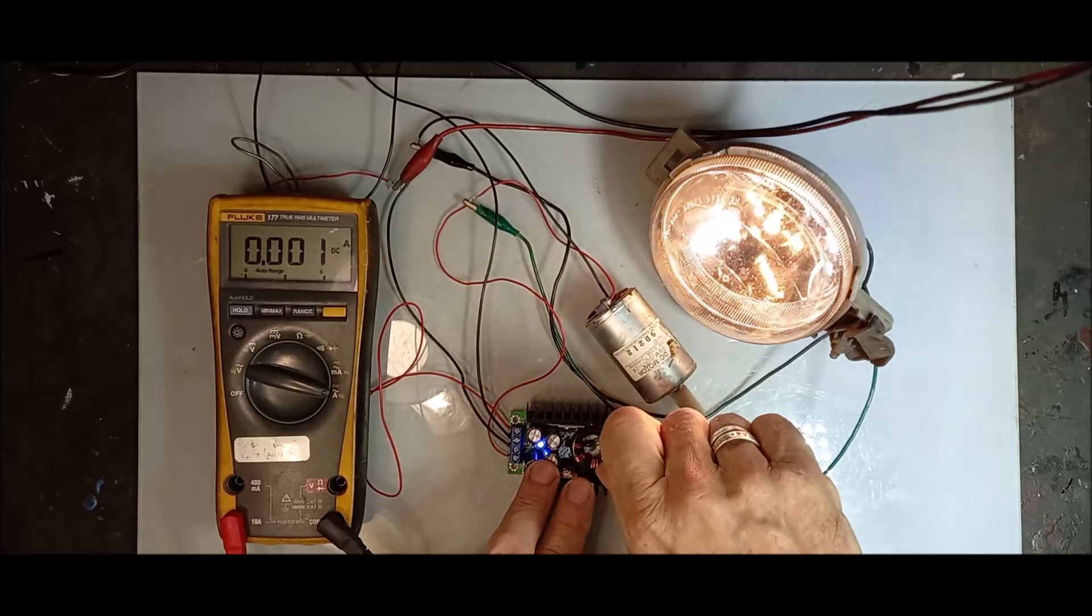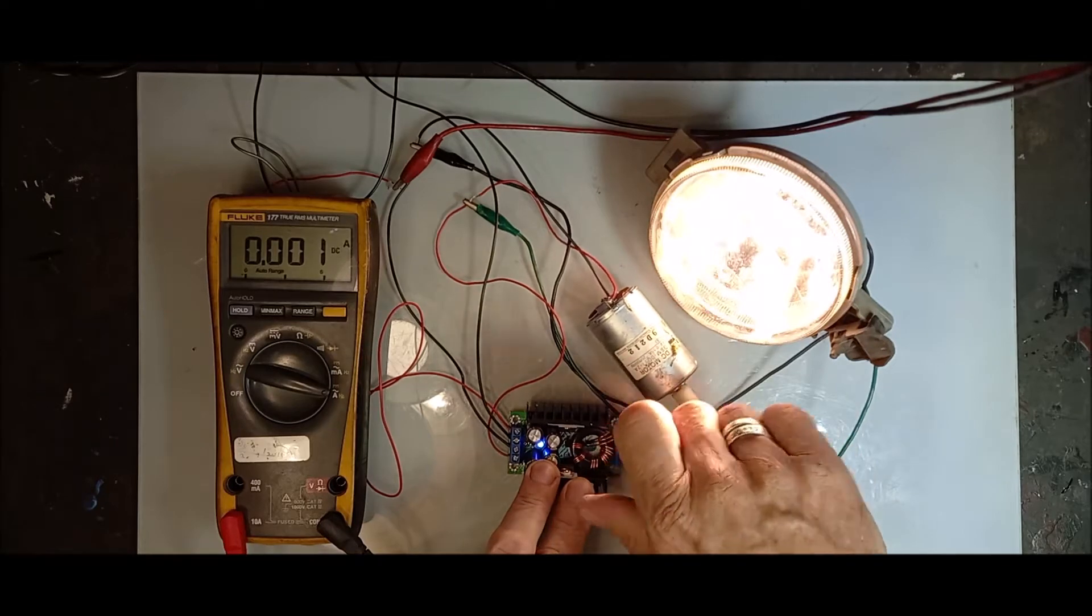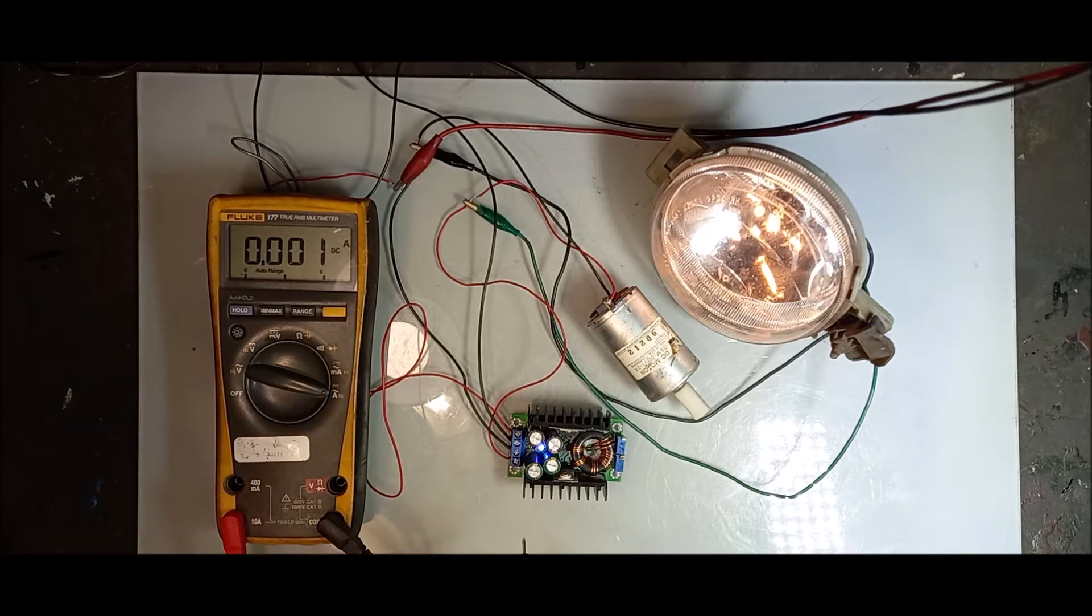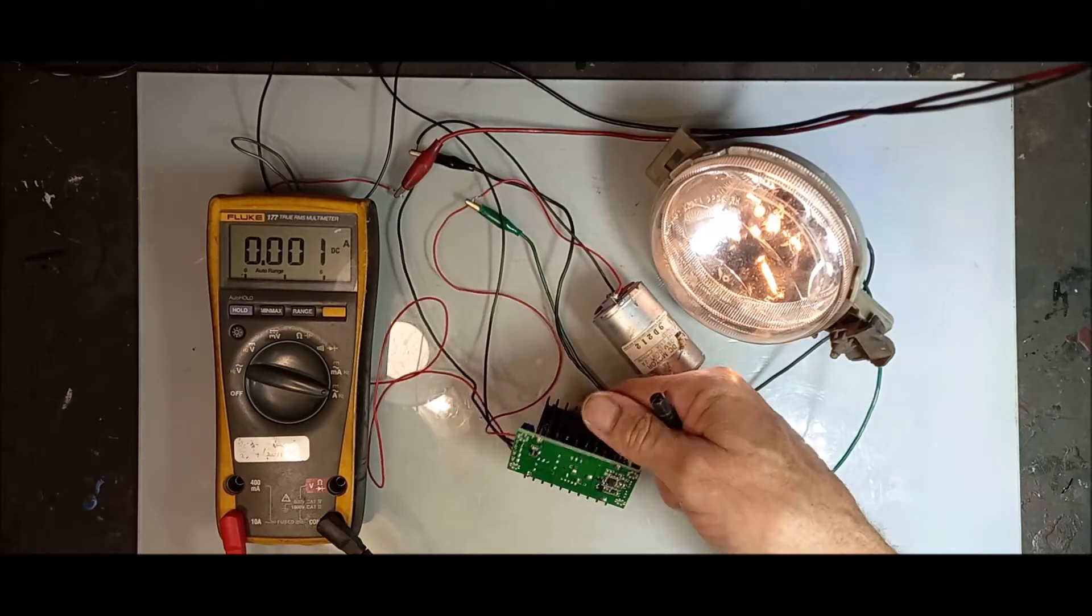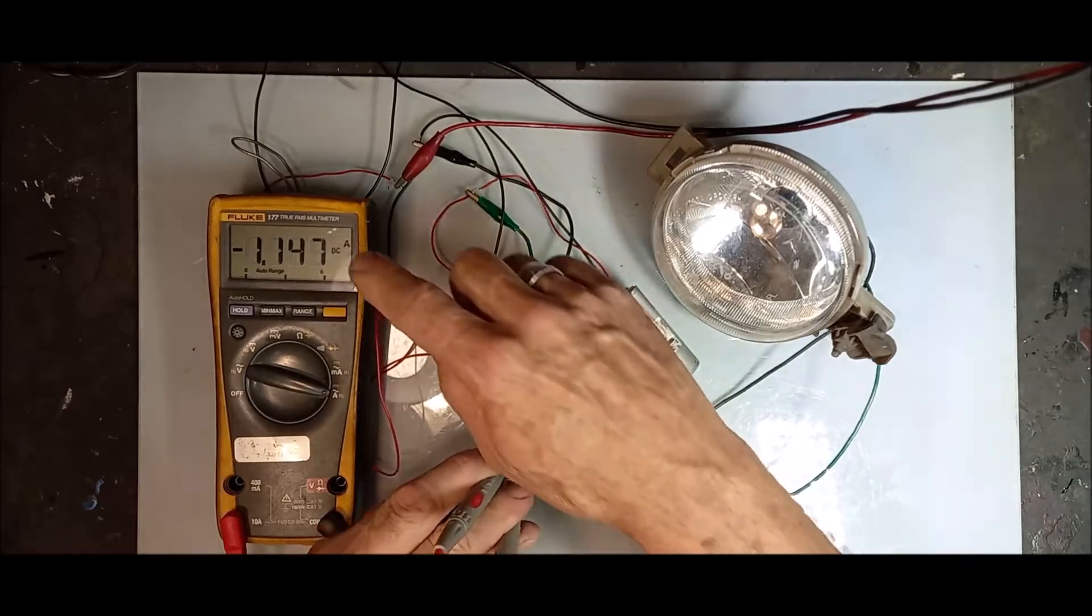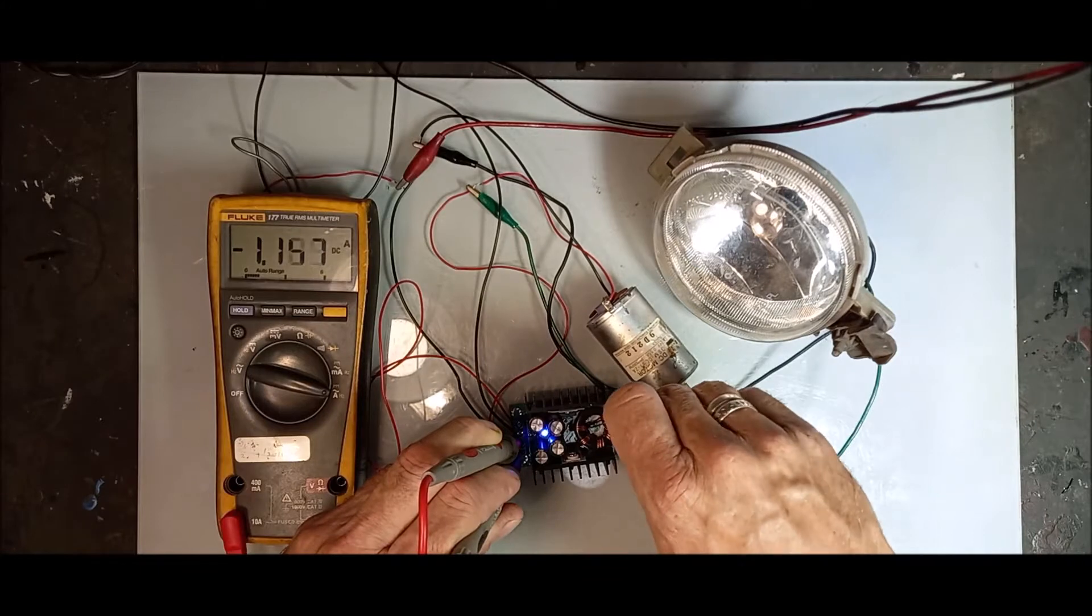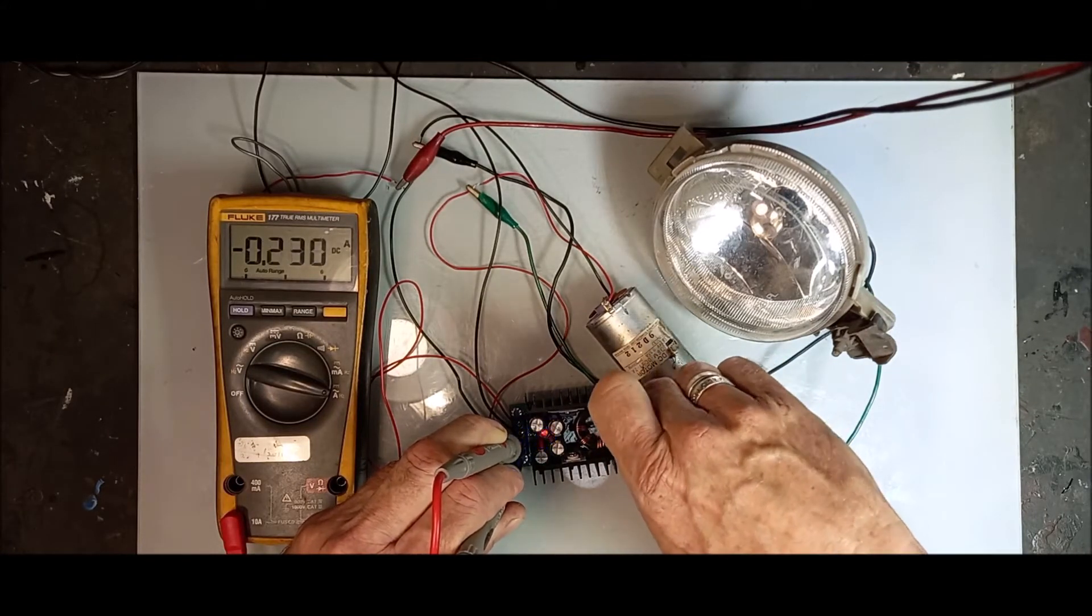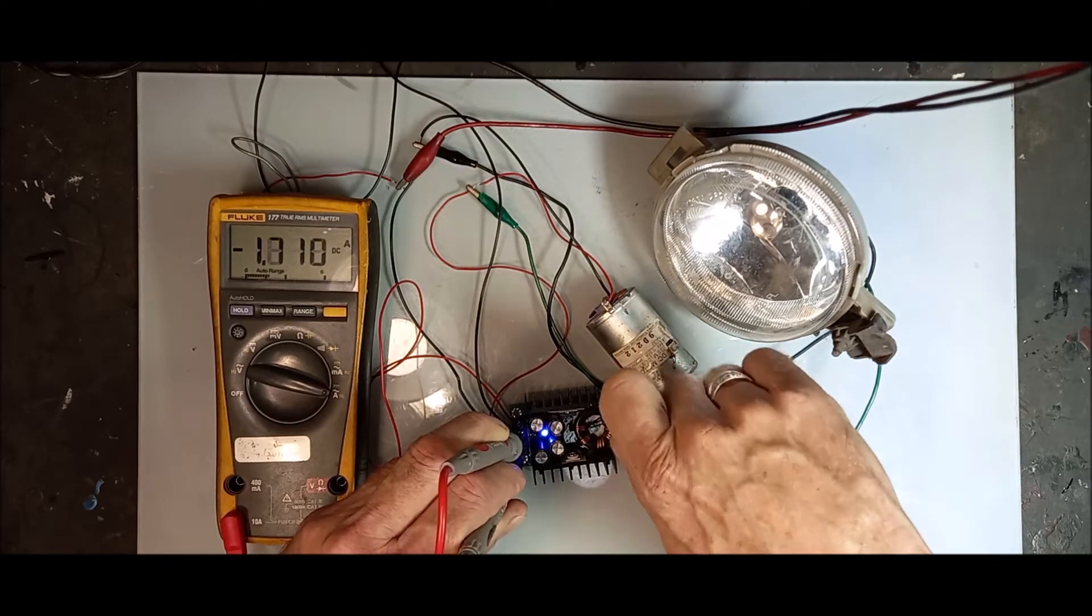See there, look here, that works perfectly. What you do now is you short the output here. Look, look, if I turn the pot, perfectly 0.0, 0.6, 0.5 amps, then you go up. Then you adjust your current.